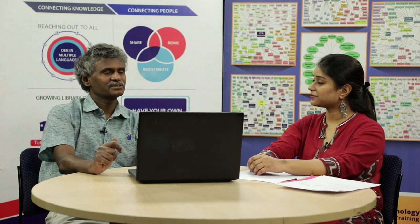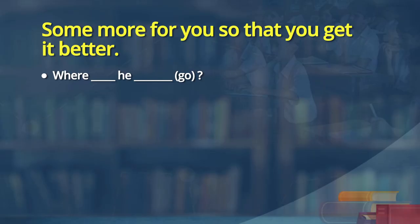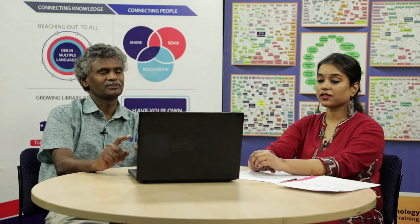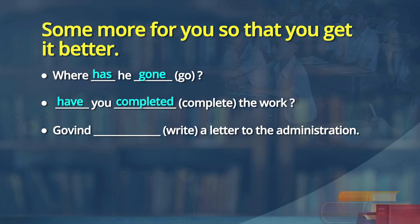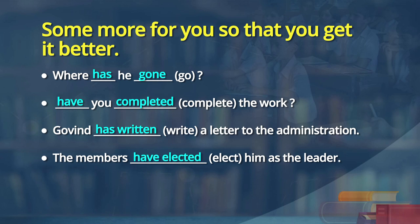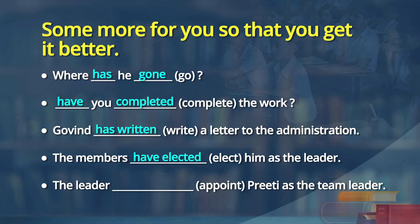Here are some more sentences for you, learners, to better understand how present perfect is used. 'Where dash he dash go?' — Where has he gone? 'Dash you dash complete the work?' — Have you completed the work? 'Govind write a letter to his administration' — Govind has written a letter to the administration. 'The members dash elect him as the leader' — The members have elected him as the leader, just now they have elected. 'The leader dash appoints Preeti as the team leader' — The leader has appointed Preeti as the team leader.